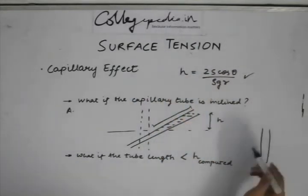It might be possible that you put a tube inside it and from your analytical calculation you derive h to be this, but the length of the tube which is outside is smaller than that. This is a very possible case.